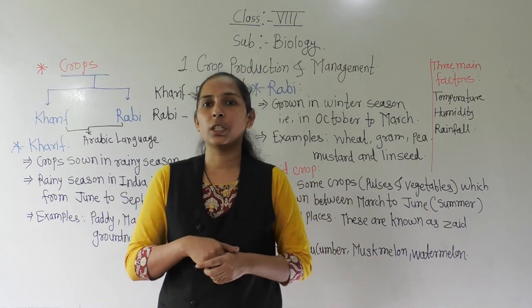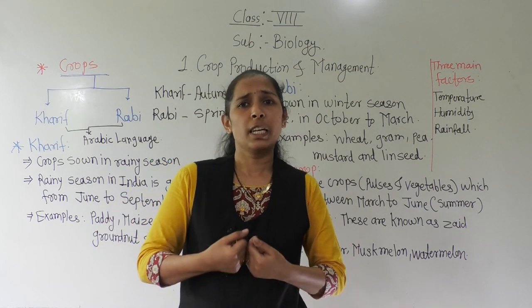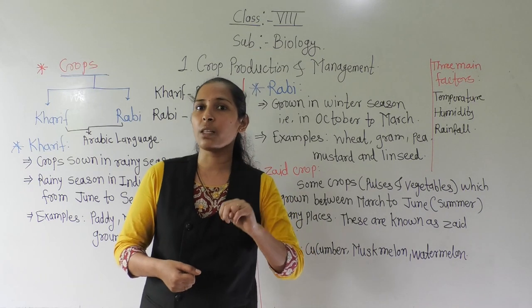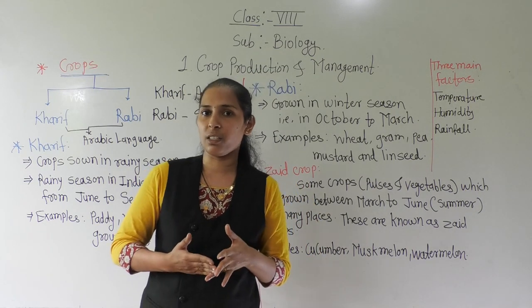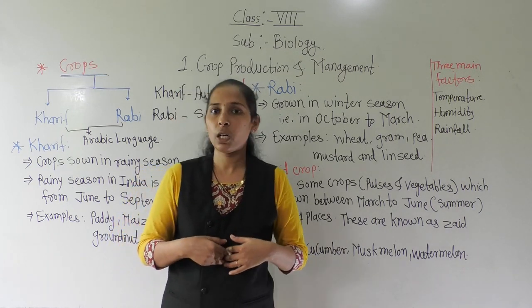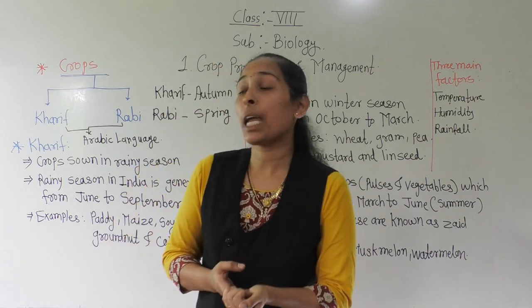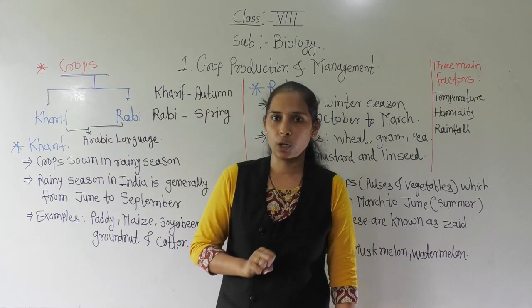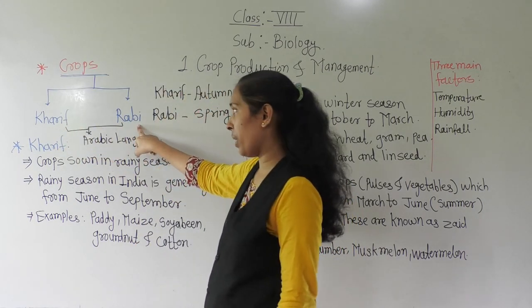If I ask you to name the seasons, the answer is simple — we have two main seasons: rainy season and winter season. According to those seasons, we take different types of crops. So today we will discuss about the types of crops. There are two main types of crops: kharif crops and rabi crops.